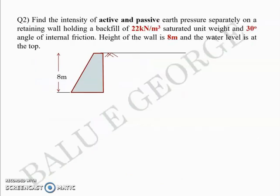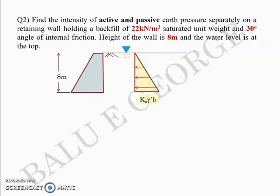The next problem asks to find the intensity of active and passive earth pressures on a retaining wall holding a backfill with saturated unit weight 22 kN/m³ and angle of internal friction 30 degrees. The wall is 8 m high and the water table is at the top, meaning the soil is submerged. Compared to the previous example, the pressure distribution will have two triangles: one with base Ka·γ'·H and another with base γ_w·H.